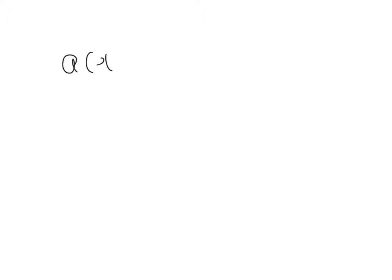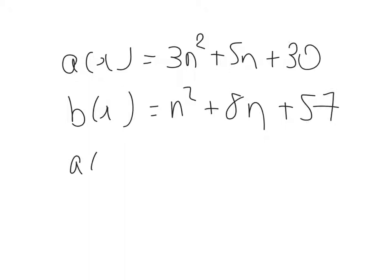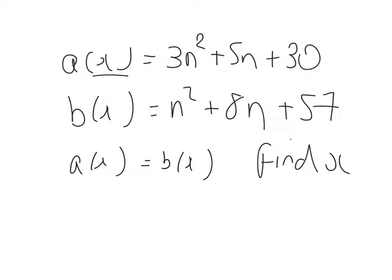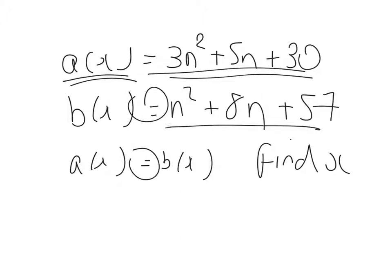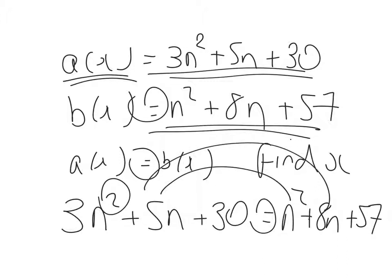A of x equals 3n squared plus 5n plus 30, and B of x equals n squared plus 8n plus 57. The question says A of x equals B of x, find x. So again, I'm going to make the function A of x equal to the function for B of x. So that first mark is easy enough: 3n squared plus 5n plus 30 is equal to n squared plus 8n plus 57. It's a quadratic equation, so bring everything across and make it equal to 0.